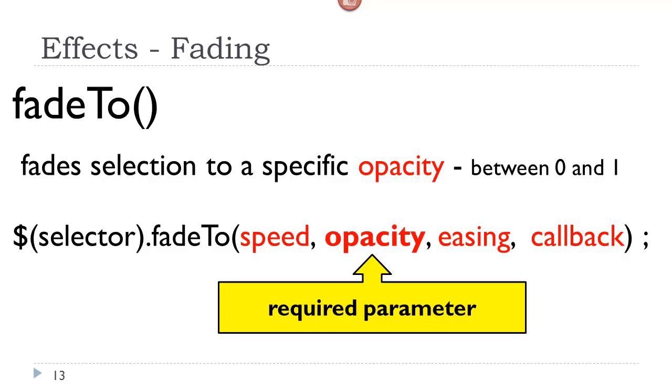So if you eliminate speed and easing, you are getting the default speed, which is 400 milliseconds, and the default easing, which is swing. So if you look at the syntax here, we have the selector dot fade to. We are fading it to a specific opacity. And opacity, which is a CSS property, is set in values between zero and one.